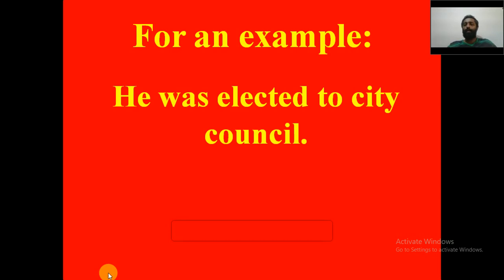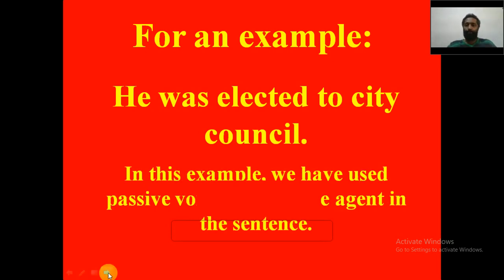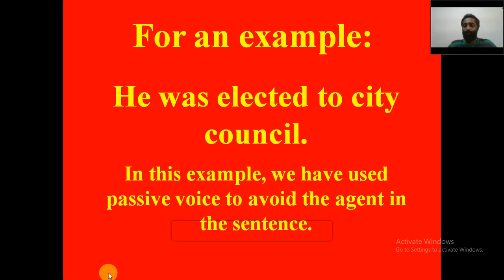For example: 'He was elected to city council.' Here we have eliminated the agent. We do not say 'He was elected to city council by someone' — the agent has been removed. In this passive voice sentence, we are not showing who performed the action of electing.